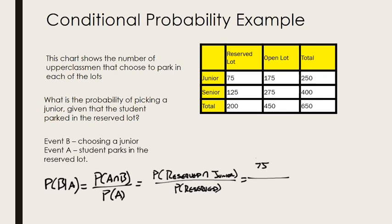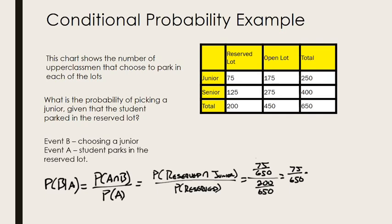So 75 out of 650 are juniors in the reserved lot, and we divide that by the probability of people in the reserved lot. There are 200 students in the reserved lot out of 650 total. When dividing fractions, flip the second and multiply — the 650s cancel — and it leaves you with 75 over 200, which equals 37.5 percent.